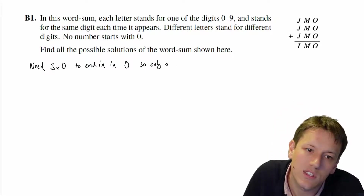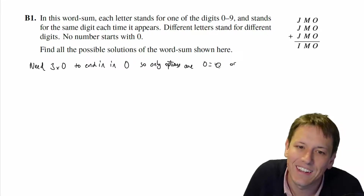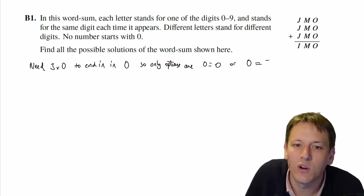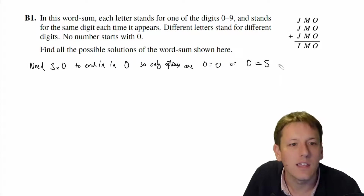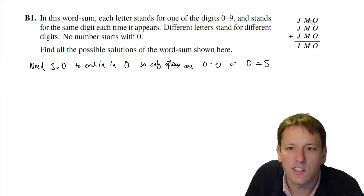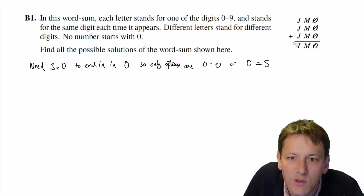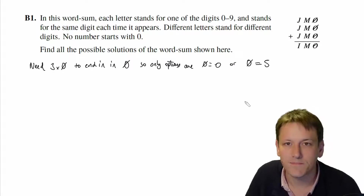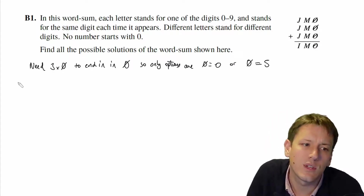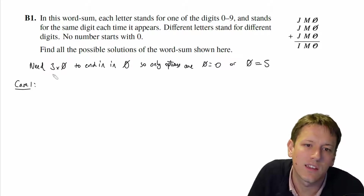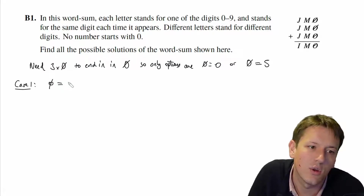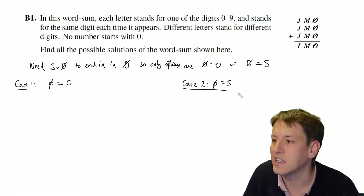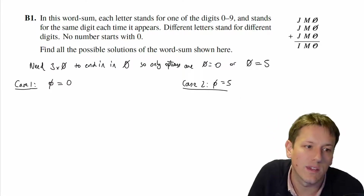So the only options are that O equals zero — very confusing to write — or O equals five. I'm going to put a line through the O's just to distinguish between the letter O and the digit zero. So there are two cases: in Case 1, O equals zero; in Case 2, O equals five, and we'll see if there are different ways of making this work.